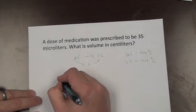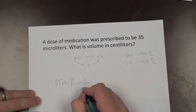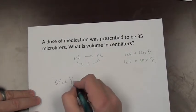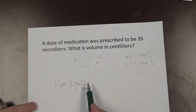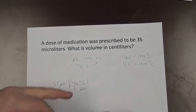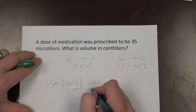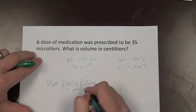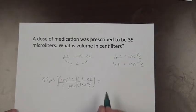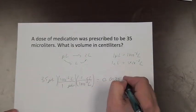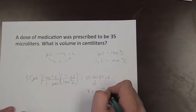Starting with 35 microliters, we cancel microliters and go to liters: 1 microliter is 1 times 10 to the negative 6 liters. Now we're halfway there with units of liters. For the second conversion, 1 centiliter is 1 times 10 to the minus 2 liters, which gives us 0.0035 centiliters, or in scientific notation, 3.5 times 10 to the negative 3 centiliters.